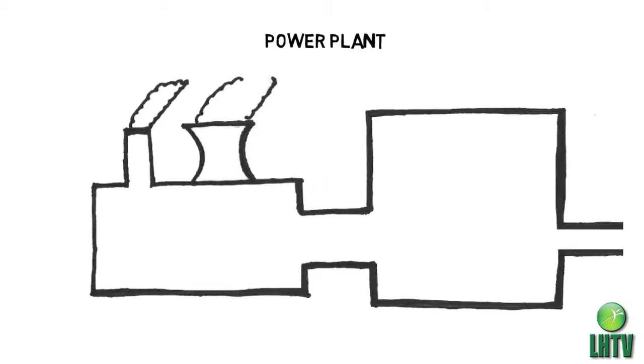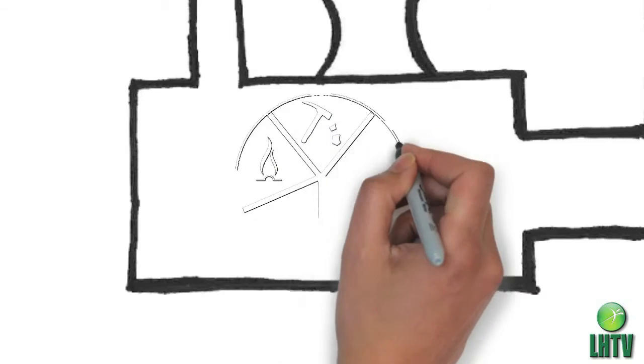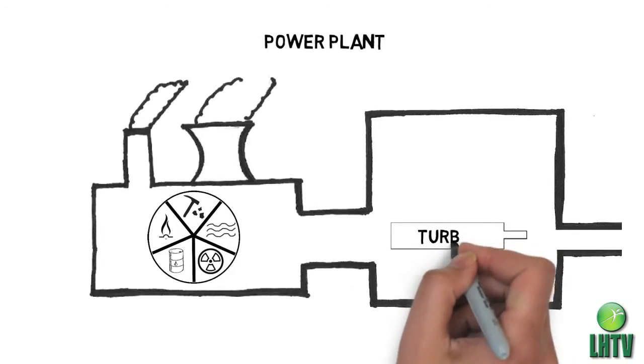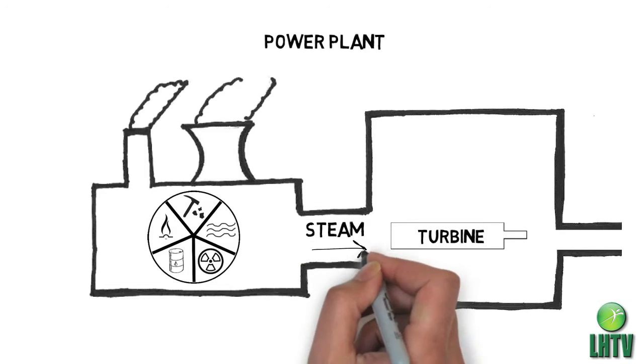It all starts at a power plant. Whether coal-fired, natural gas, nuclear, oil, or hydro, there are these things called turbines that are driven by steam or water that generate electricity.